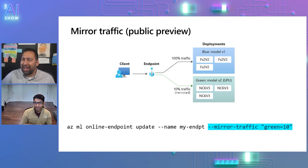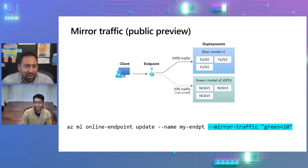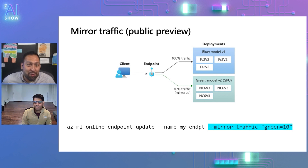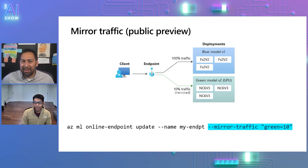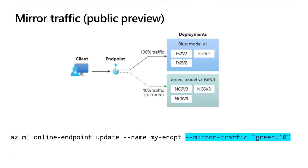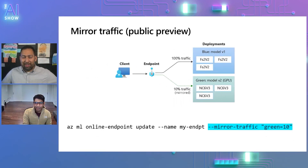I can imagine scenarios where you have a three-nines SLA and you divert 5% to green when it doesn't work — all of a sudden you're at 95% availability, which is not good. But with mirror traffic, you just mirror the traffic and monitor how it handles requests without impacting the SLA. To use this it's very straightforward — users who have seen the online endpoint update API can simply set the mirror traffic flag to whatever percentage is needed.